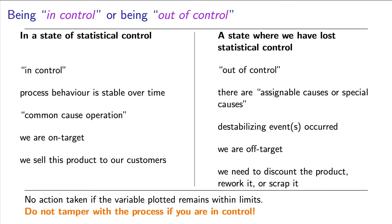Regular operation is stable. The product being produced has variability, but it is still sold to the customer as good quality product. When we are out of control, we say that special cause or special causes have occurred — some destabilizing event has happened. We are out of control and off target. This is product that we typically will not sell to our customer; we may have to modify it, sell it at a lower price, or even destroy it.